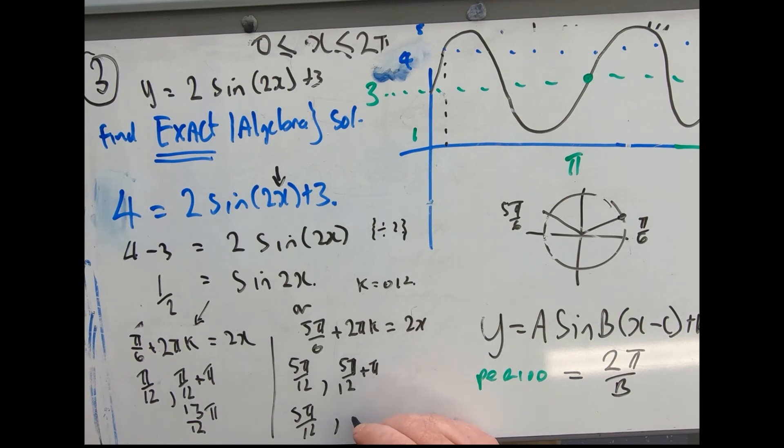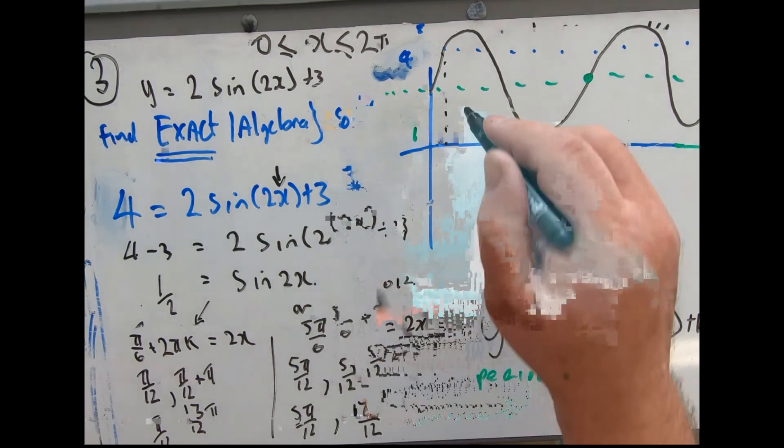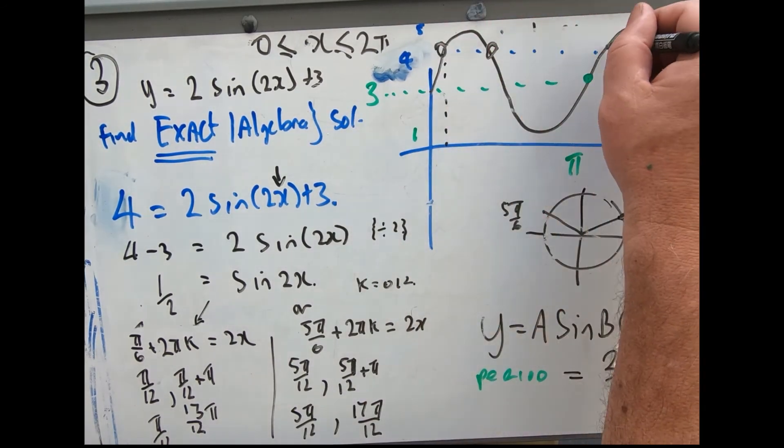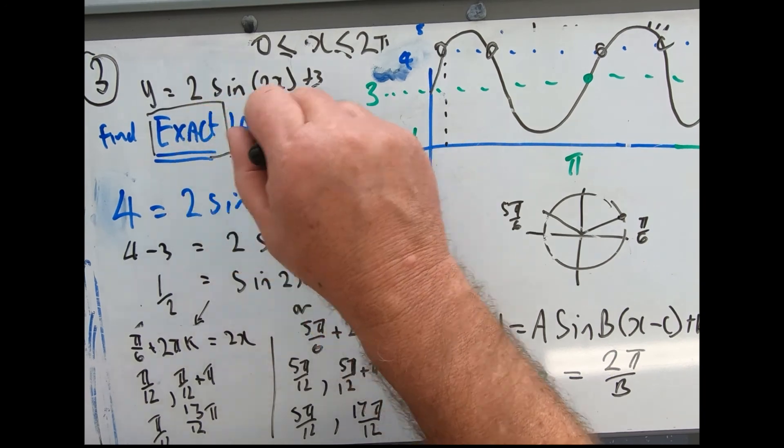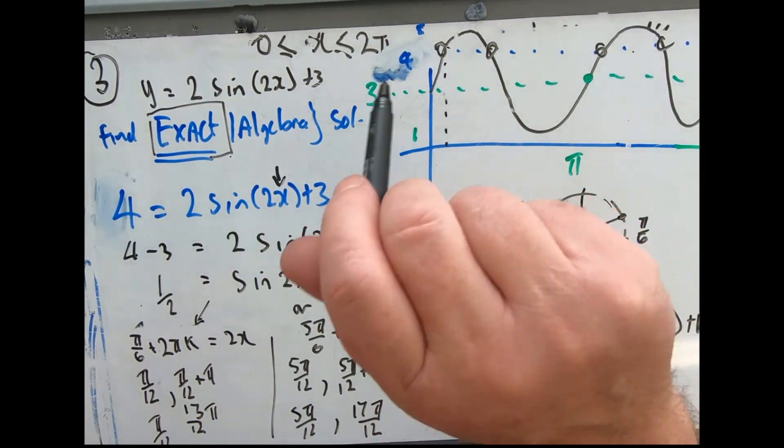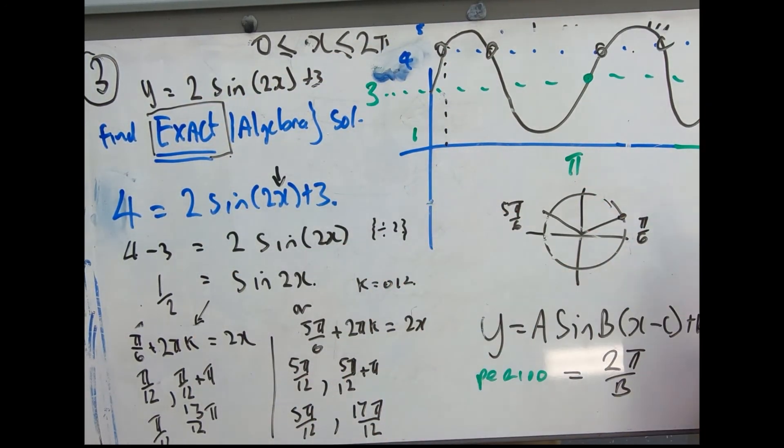So these are the four answers. This is what the word 'exact' means - algebraically. You could quite easily get G solve on a calculator, but this is what we're looking for here. So this is really using that picture.